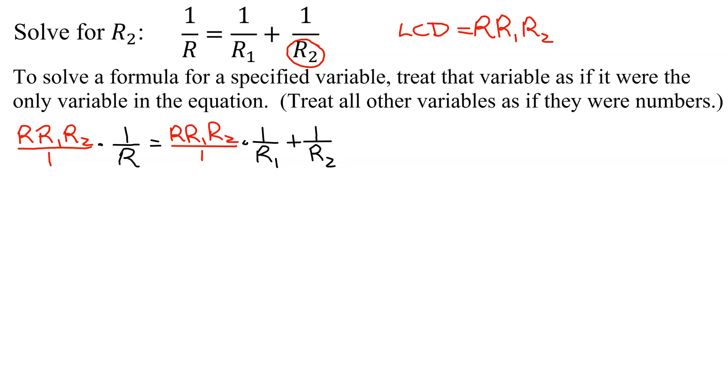And I'm going to, again, multiply that by R, R1, R2, all divided by 1. So simplifying this first term, R's reduce, and I get left with R1 times R2 on the left-hand side.